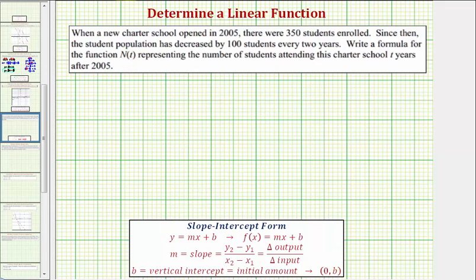Because we're looking for a linear function n(t), notice how the input variable is t, not x. Therefore our linear function will be in the form n(t) equals mt plus b. In order to find our linear function, we need to find the slope m and the vertical intercept b. And we can get both of these from the given information.